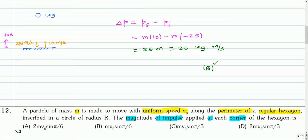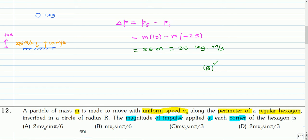This is the next question. A particle of mass M is made to move with uniform speed V₀ along the perimeter of a regular hexagon inscribed in a circle of radius R. The magnitude of impulse applied at each corner of the hexagon is? You can pause the video and attempt this question.